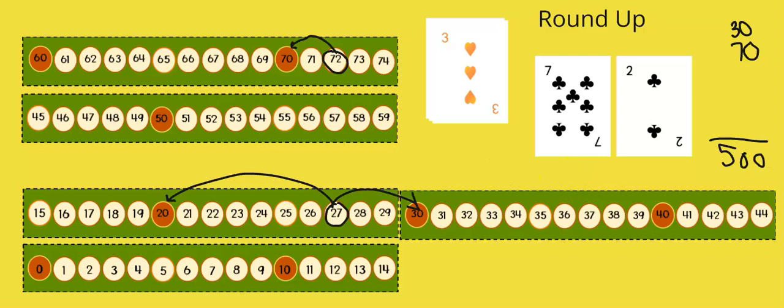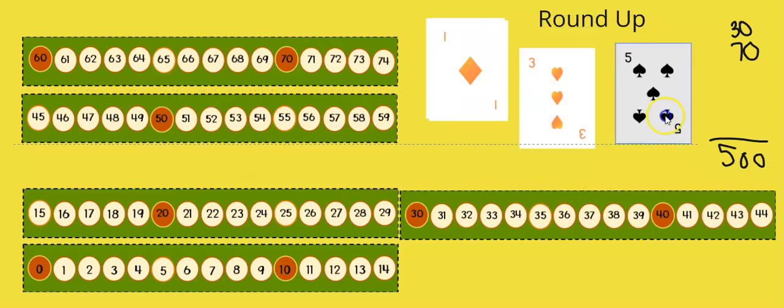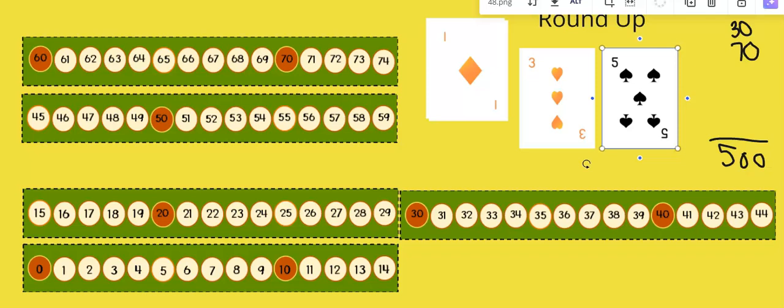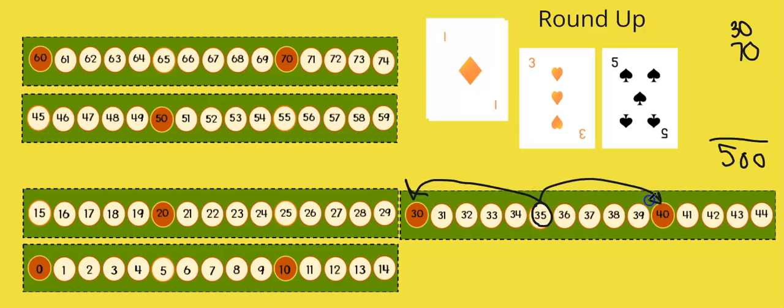So the next person goes and they get a three and a five. So they're now looking at 35 and they can circle that on the board and then they have to determine if this is closer to 30 or to 40. And in this case you're going to recognize that it's directly in the middle.